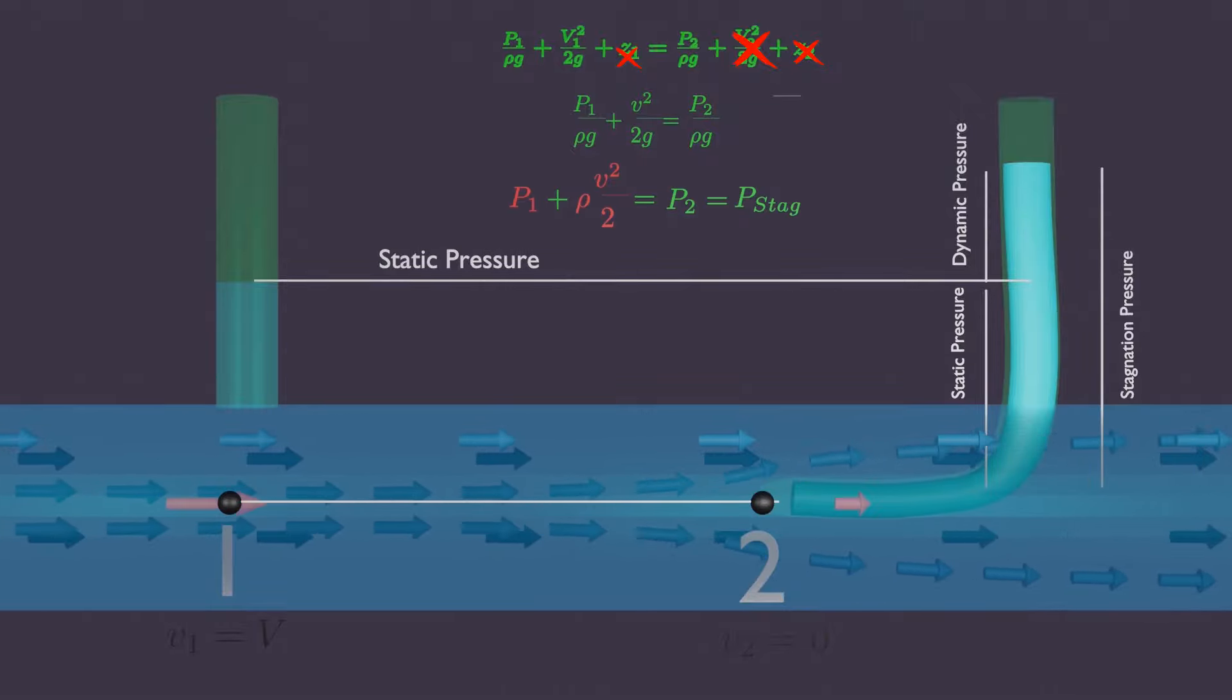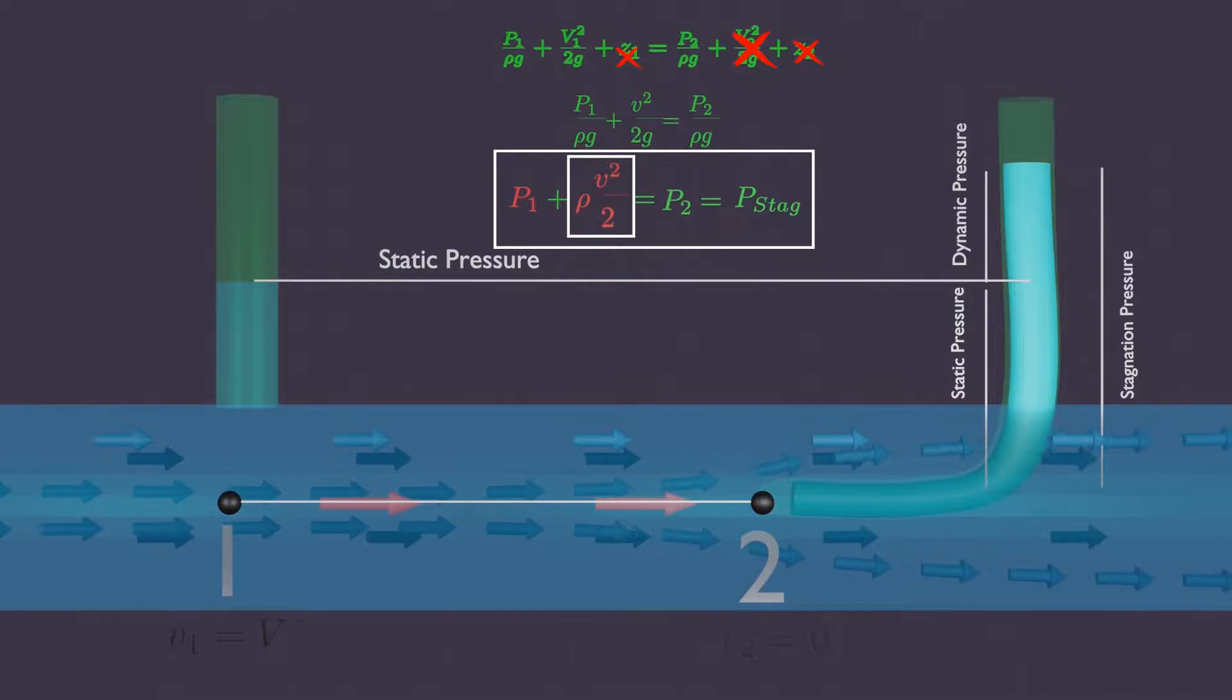Oh, look! We get the pressure at point 2, that is stagnation pressure, is sum of static and dynamic pressure.